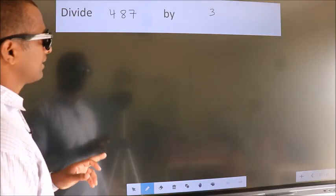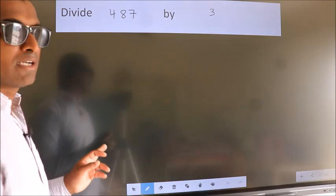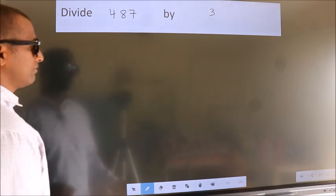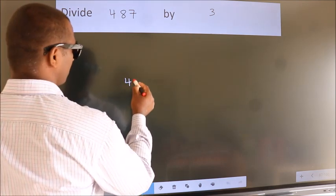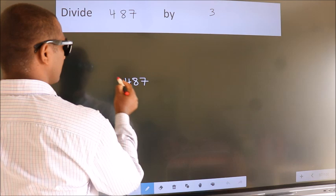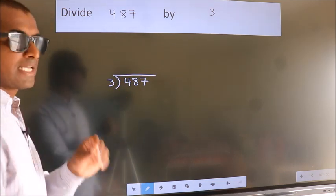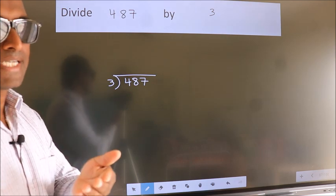Divide 487 by 3. To do this division, we should frame it in this way. 487 here, 3 here. This is your step 1. Next.